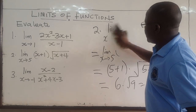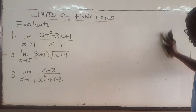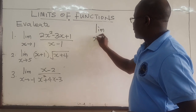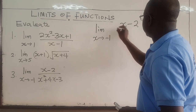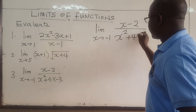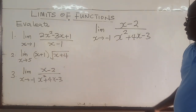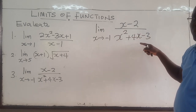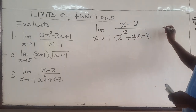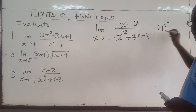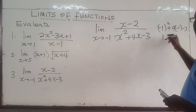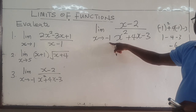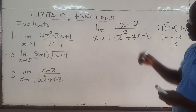The last one: find the limit as x approaches negative 1 of (x minus 2) all over (x squared plus 4x minus 3). You check whether negative 1 is in the domain of this function — what's important is the denominator. Plugging in negative 1: negative 1 squared plus 4 times negative 1 minus 3 gives 1 minus 4 minus 3, which is negative 6. Since it's not 0, negative 1 is in the domain.